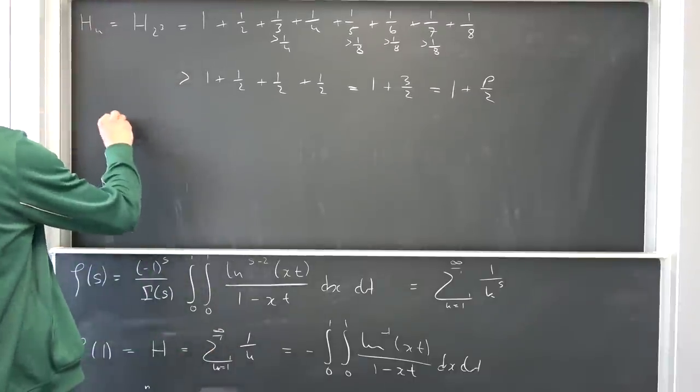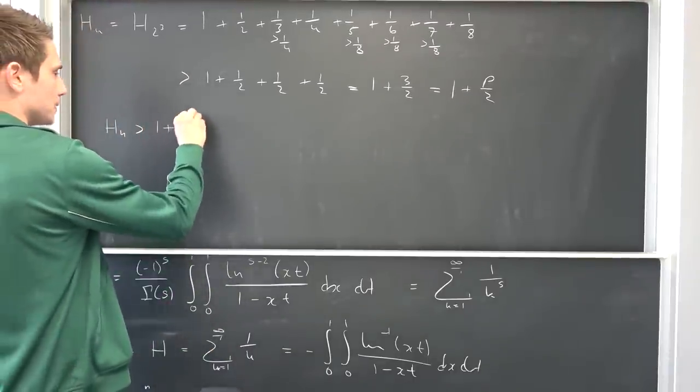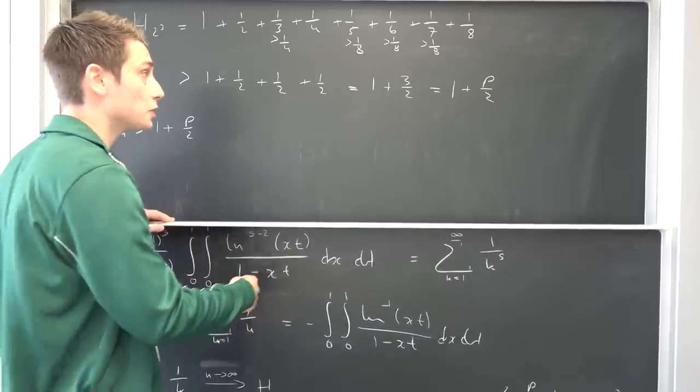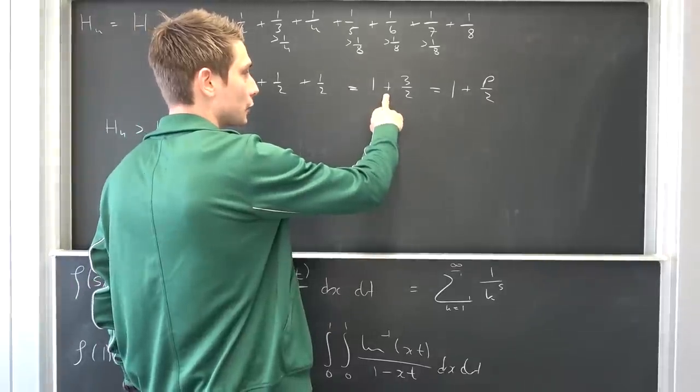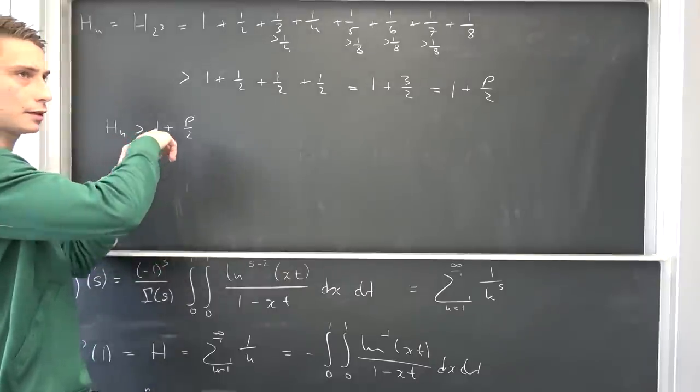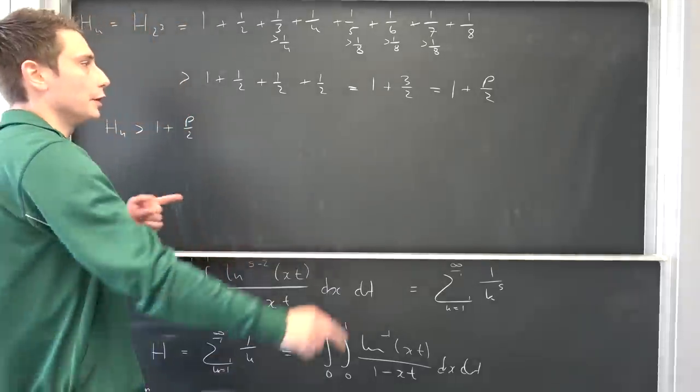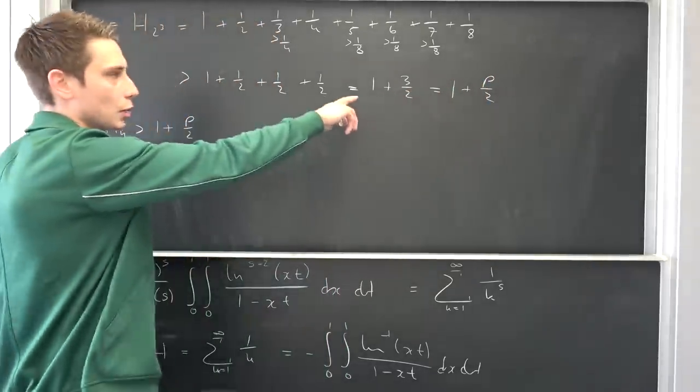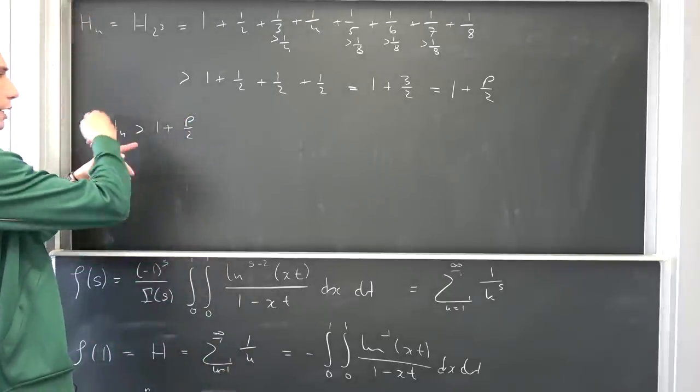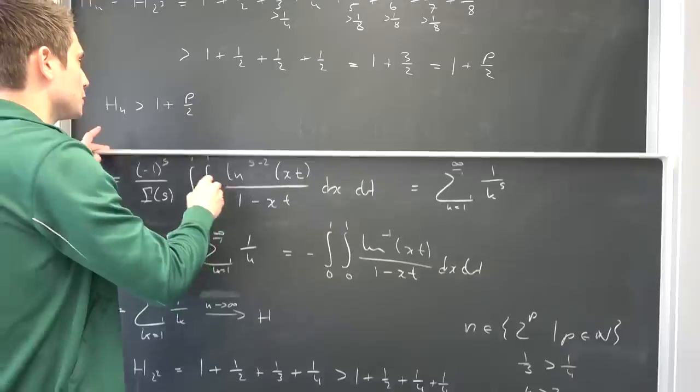This means our h_n is always strictly greater than 1 plus p over 2. This is something we can observe. You can try it out for 1/16th and we are going to get that this is strictly greater than h_n where n is equal to 2 to the 4th power. Then you can easily see that it's once again 1 plus 4 over 2. So we always have this of the form 1 plus p over 2. And if we now let p go to infinity...